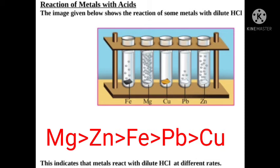The order of reactivity with dilute HCl: magnesium produces the largest amount of hydrogen gas, then zinc, then iron, then lead. Copper has no reaction. This indicates that metals react with dilute HCl at different rates.